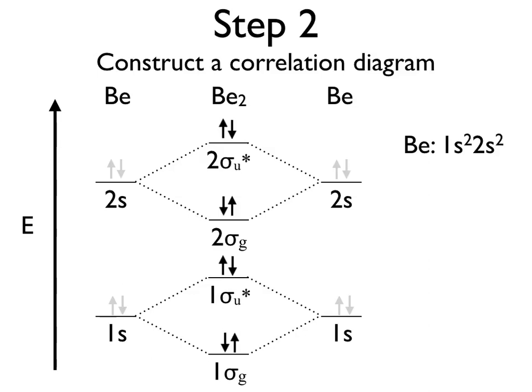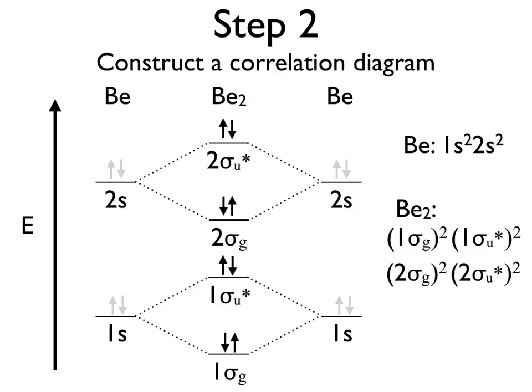Based on all this, we can write the electronic structure for the Be2 molecule. For a Be atom it was 1s² 2s², whereas for a Be2 molecule it's (1σg)² (1σu*)² (2σg)² (2σu*)².